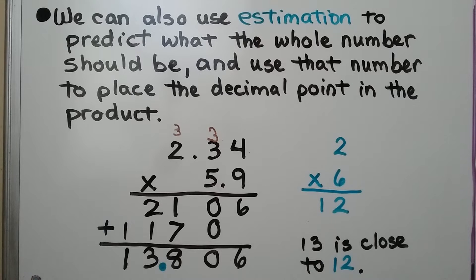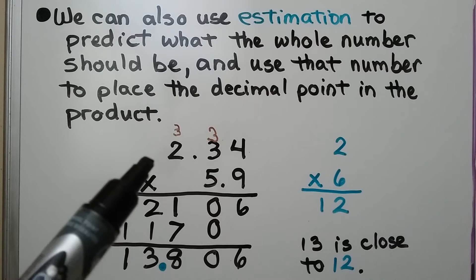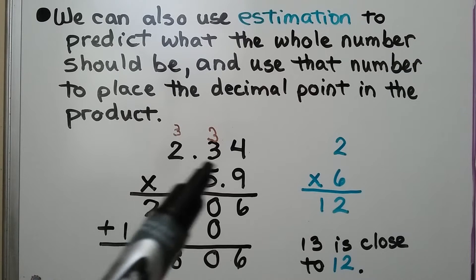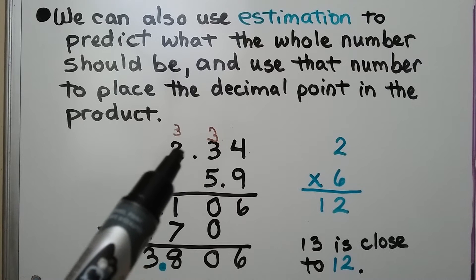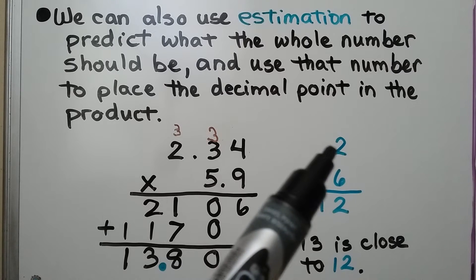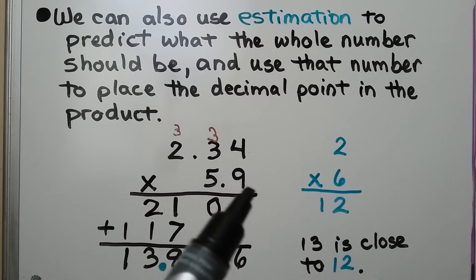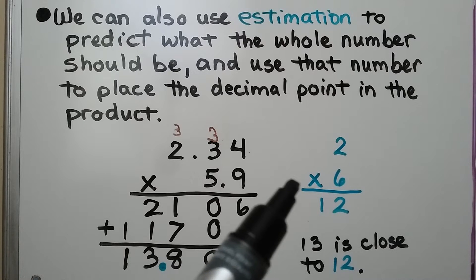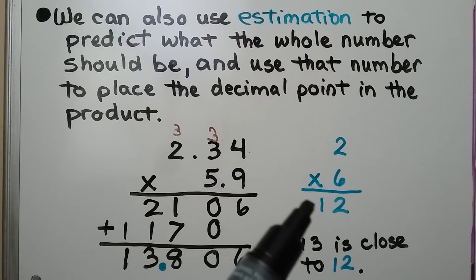We can also use estimation to predict what the whole number should be and use that to place the decimal point in the product. We have 2 and 34 hundredths times 5 and 9 tenths. The 3 tells the 2 to stay the same, so it rounds to 2. The 9 tells the 5 to round up to 6. We have 2 times 6, which is 12.